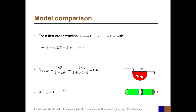The corresponding number for the PFR is X equals 1 minus e to the negative K times theta. With numbers, the conversion in the PFR is 0.86. That means the conversion in the PFR is much higher than in the CSTR reactor, and that is due to the different mixing regimes.